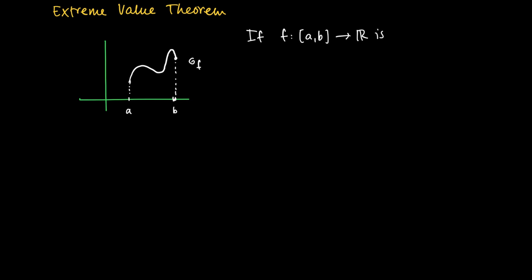So suppose we have a continuous function on some closed interval [a,b], then the statement of the Extreme Value Theorem is that f has an absolute maximum f(c) and an absolute minimum f(d).